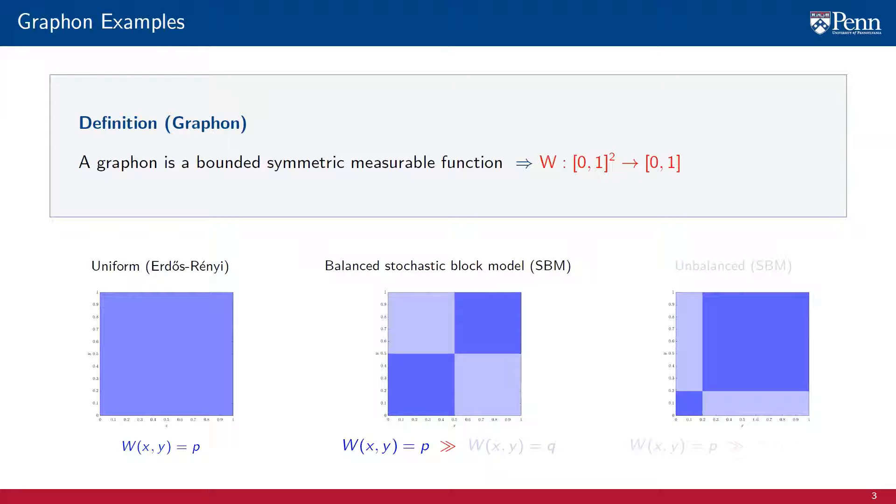This graphon models two communities, one community with labels varying from 0 to 1/2 and the other community with labels varying from 1/2 to 1. The connection within communities is strong. The edge weights are large. The connection across communities is weak. The edge weights are small.